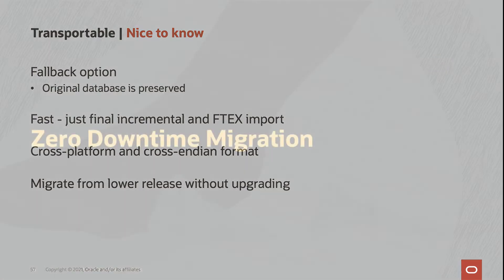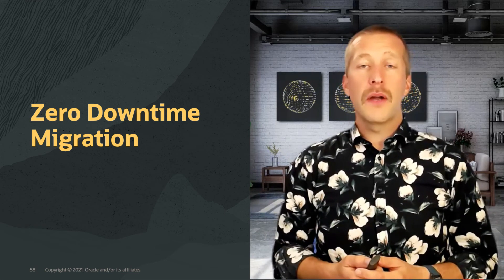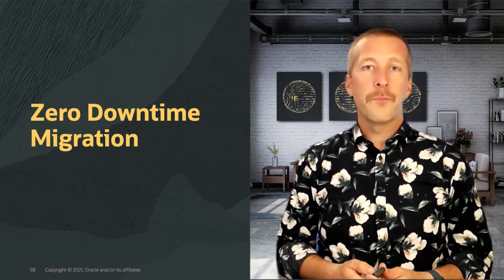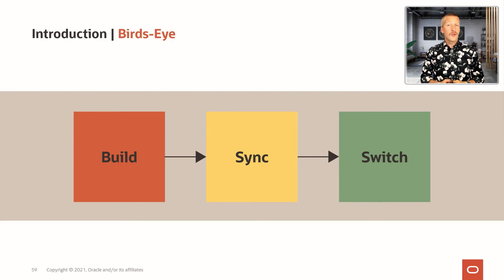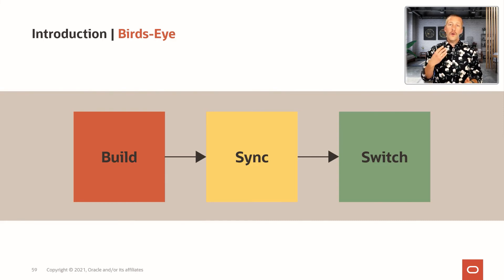Now let's move on to Daniel, who will talk about ZDM. Thanks, Rodrigo. Let's talk about ZDM — Zero Downtime Migration. It's an advanced tool that you can use for free when migrating your database into OCI. It uses three simple steps: first, we build a copy of your database in OCI while the source database is still online, meaning there is no outage. Then we keep the target database in sync using either Redo Apply or Oracle GoldenGate. And finally, at your will when you're ready to complete the migration, a simple switchover completes the migration and allows users to use the new cloud database in OCI.